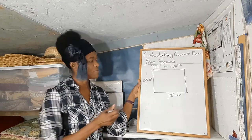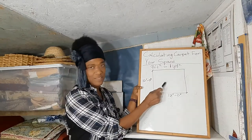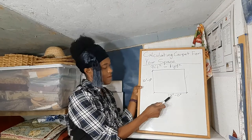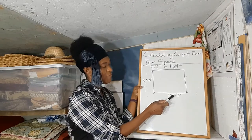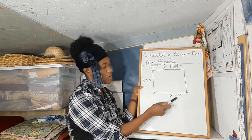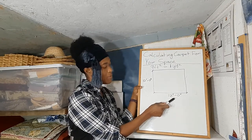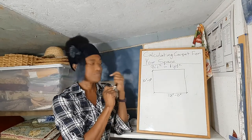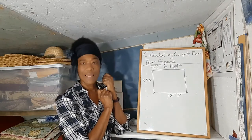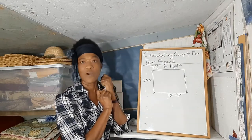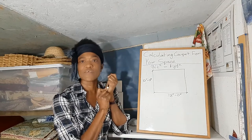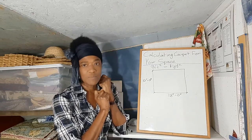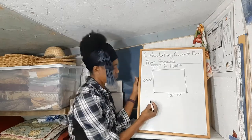Okay, I have an example here. Pretend this is the floor plan of a space, and we have 12 feet for our width and 10 feet for our length. Now we need to find the square feet — we multiply length by width.